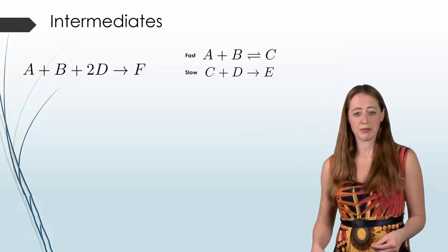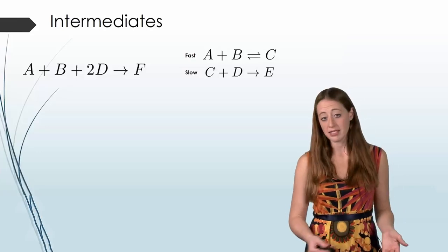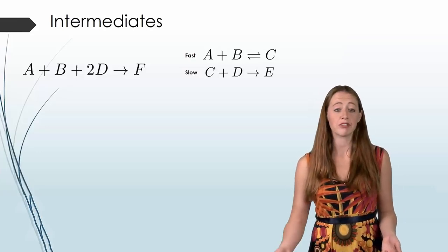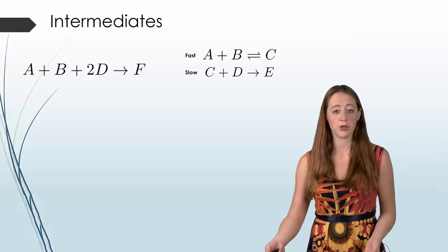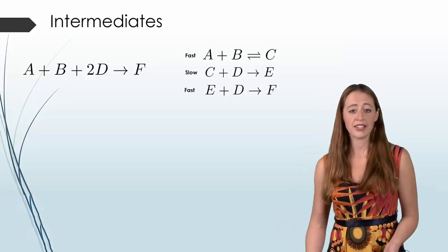Our second step is going to be our slow step. And that's C plus D. So our intermediate from our first reaction plus our reactant D goes to E.